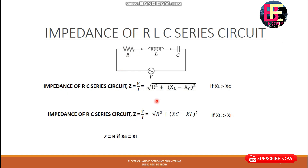We are going to change the impedance. If we change the resistance in the circuit, it is an inductive property. If XL dominates, it is inductive; if XC dominates, it is a capacitive circuit — that is the total opposition.